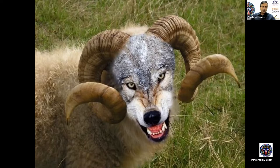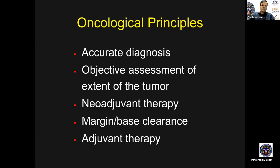One clinical feature in one tumor is all you need to look for. As a clinician dealing with ocular surface tumors, you want to completely eradicate them and avoid local recurrence, regional lymph node, or systemic metastasis. You must combine surgical skills with oncological principles: accurate diagnosis, objective assessment of horizontal and vertical extent and depth, indications for neoadjuvant therapy, margin and base clearance for surgical excision, and histopathology-guided adjuvant therapy.